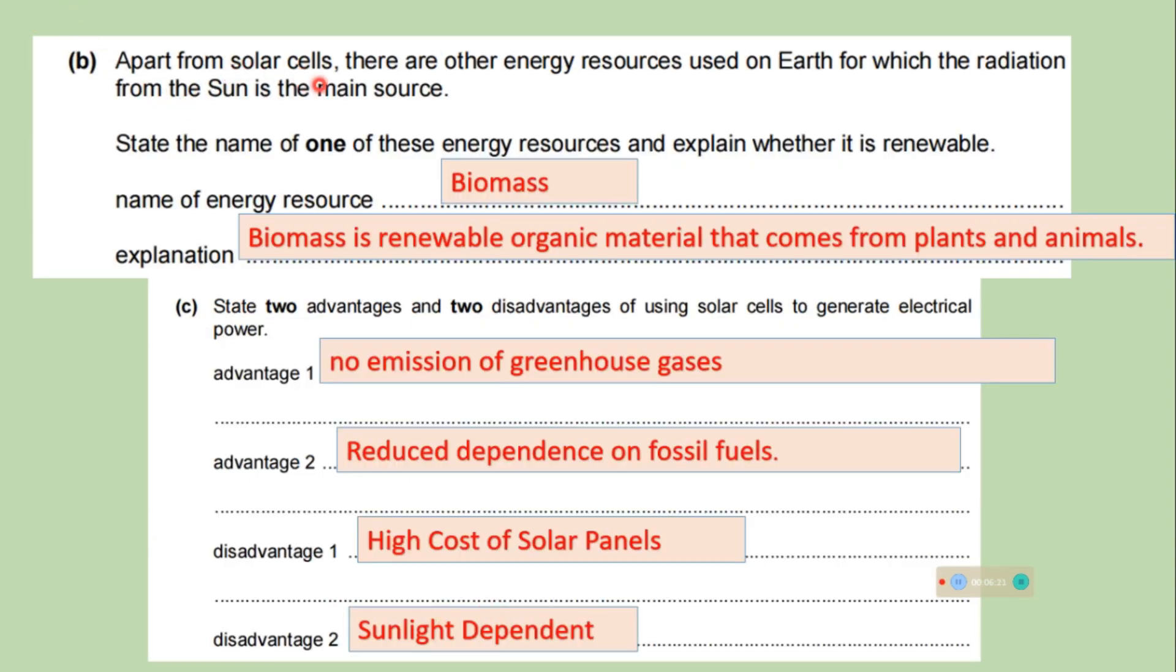Apart from solar cells, there are other energy resources used on earth for which the radiation from the sun is the main source. State the name of one of these energy resources and explain whether it is renewable. So name of energy resources, you can write biomass. And explanation, biomass is renewable organic material that comes from plants and animals.